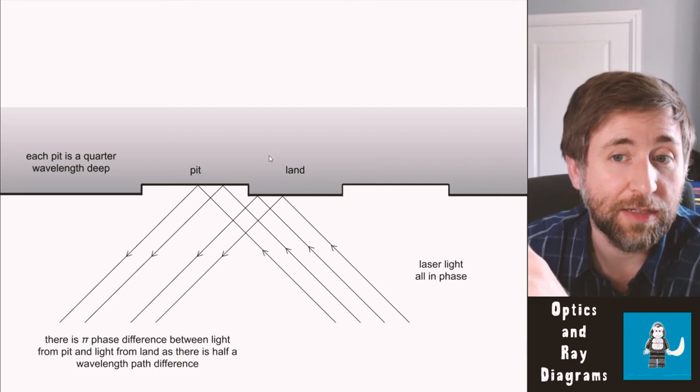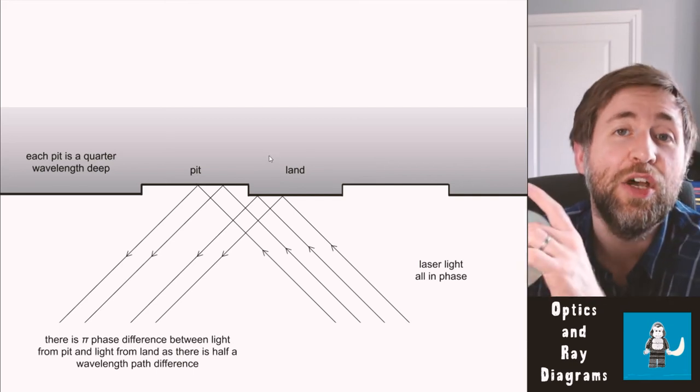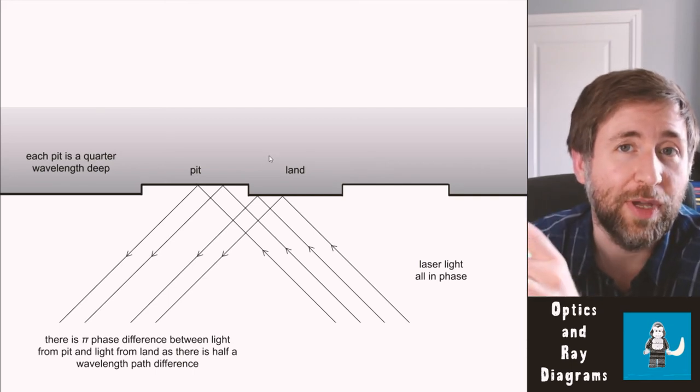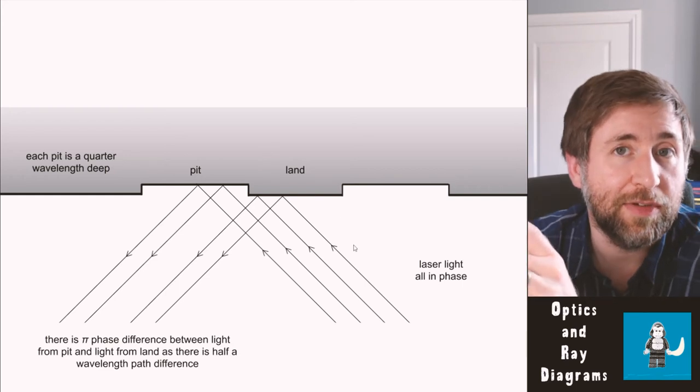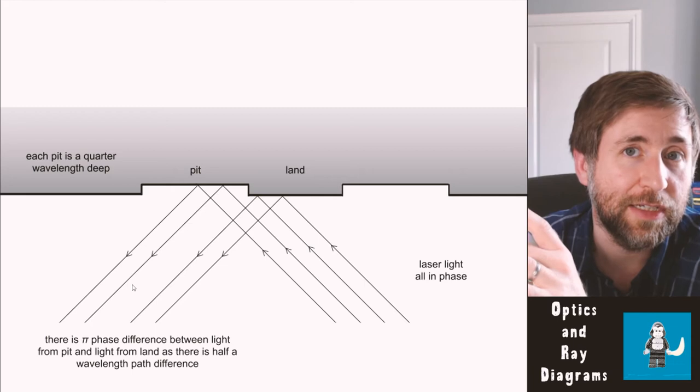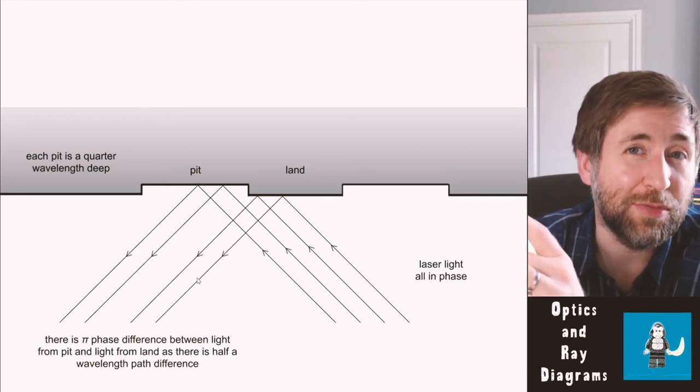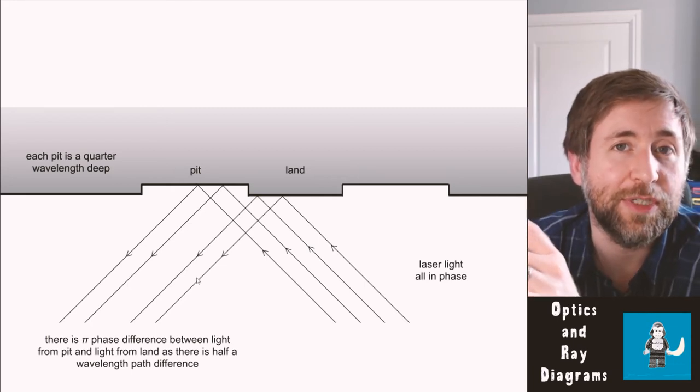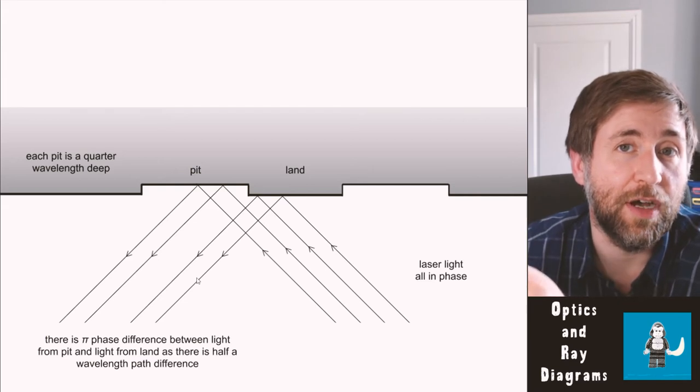The depth of each pit is a quarter of a wavelength deep. And that means that laser light and the characteristic of laser light is that all of the photons, all of the waves are in phase. So when you have laser light landing on either the pit or the land, the reflected laser light comes back having traveled half a wavelength further. So we can say that there's a path difference of half a wavelength.